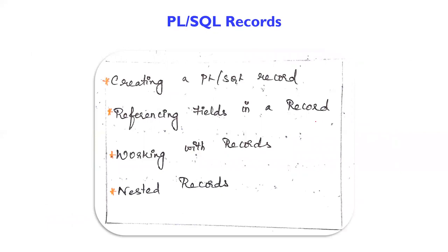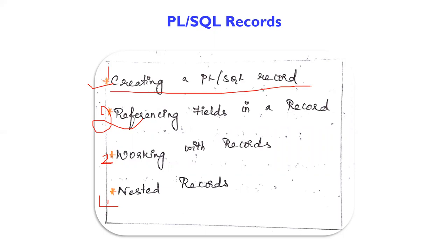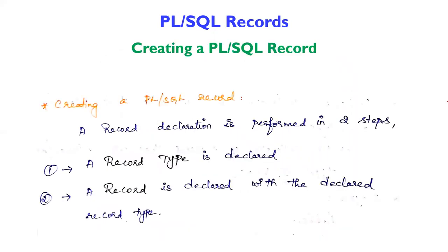In PL/SQL records, there are four subtopics: first, creating a PL/SQL record; second, how to reference fields in a record; third, how records work; and fourth, how records are nested together. Creating a PL/SQL record — a record declaration is performed in two steps.